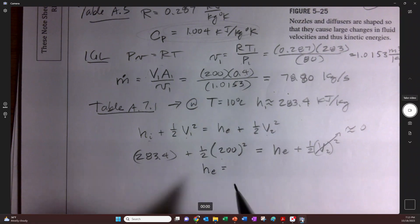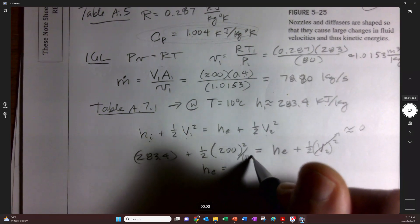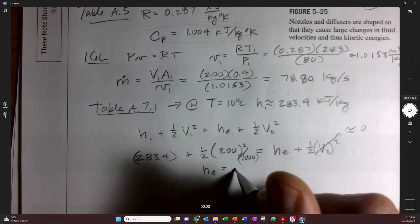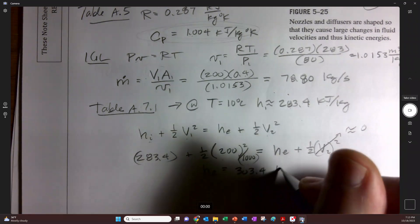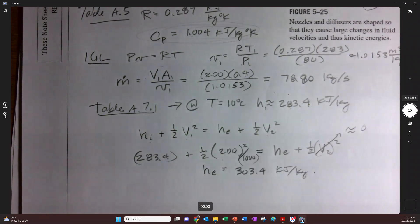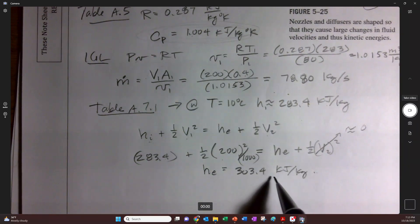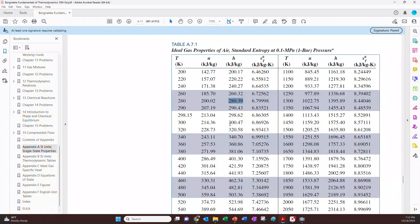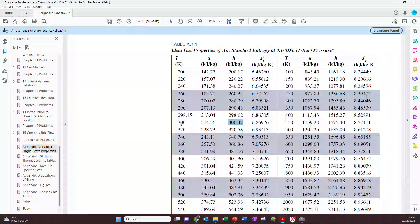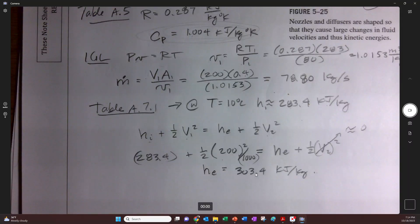So we could take H2 from the diffuser, the outlet of the diffuser. And by the way, I need to divide by 1000, I forgot. And we get 303.4 kilojoules per kilogram. So that's not great right there because if we're going to use the tables, we have to go backwards and interpolate in between here to find out what that temperature is, which turns out to be about 303 Kelvin.